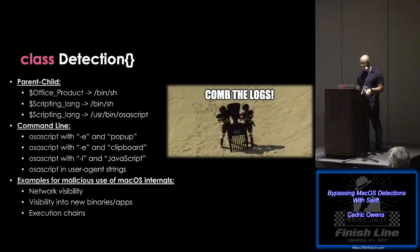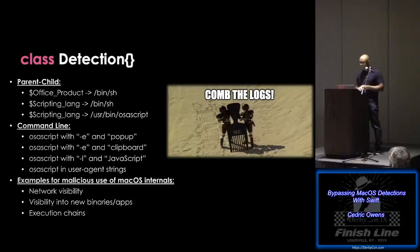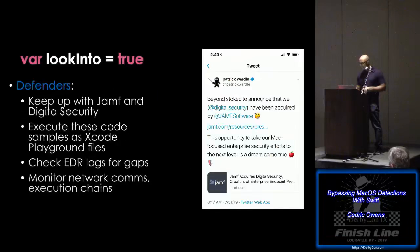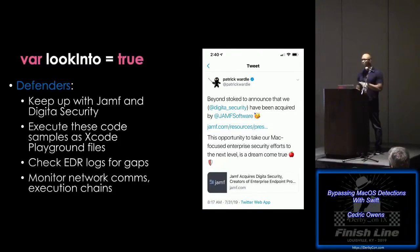For detection recommendations: watch for osascript execution, shell environment spawning, and command-line based post-exploitation patterns. Have good network visibility to detect beaconing activity and anomalies around apps — are they dropping other files or beaconing out? I also recommend blue teams stay current with Jamf, which purchased Patrick Wardle's company. He's been on the forefront of bleeding-edge macOS security research, and I think some cool things will come out of that combination.